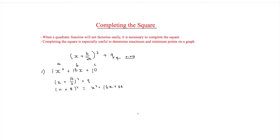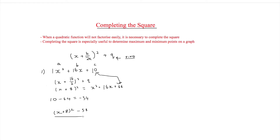If you see, this looks fairly similar to our original expression x squared plus 16x plus 10, but here we've got x squared plus 16x plus 64. The only thing that's different is the 64 and the 10. To find q, we do 10 minus 64 which equals minus 54. So the answer is x plus 8 squared minus 54, and that is exactly the same as x squared plus 16x plus 10. We have now completed the square.